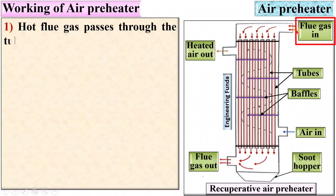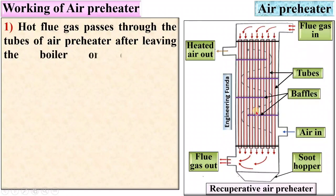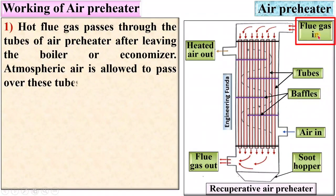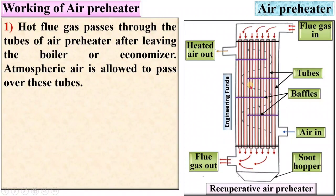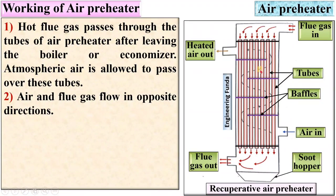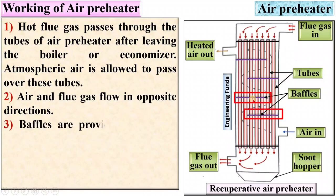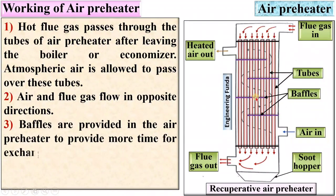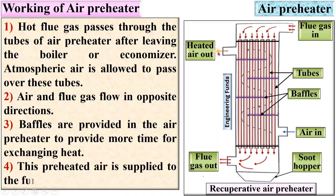Working of air preheater: flue gases pass through the tubes of the air preheater after leaving the boiler or economizer. Atmospheric air is allowed to pass over these tubes. Air and flue gases flow in opposite directions — flue gas flows in the downward direction whereas air flows in the upward direction, which is sometimes called counter flow. Baffles are provided to allow more time for exchanging heat. This preheated air is then supplied to the furnace of the boiler.